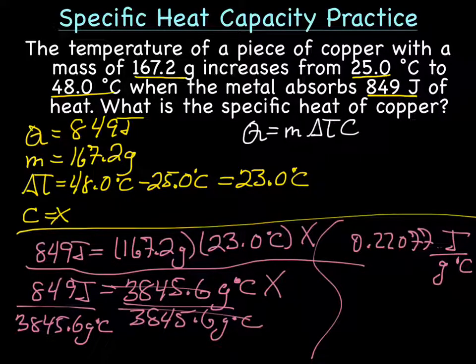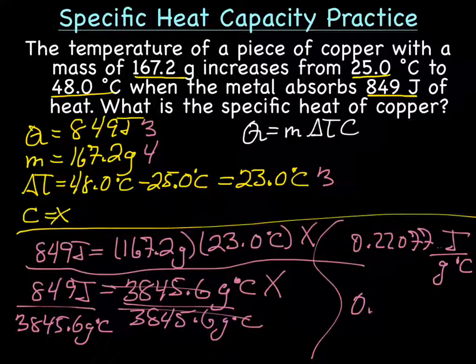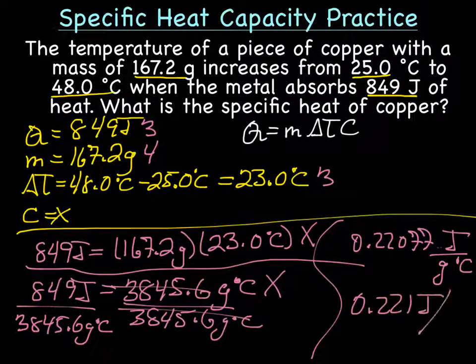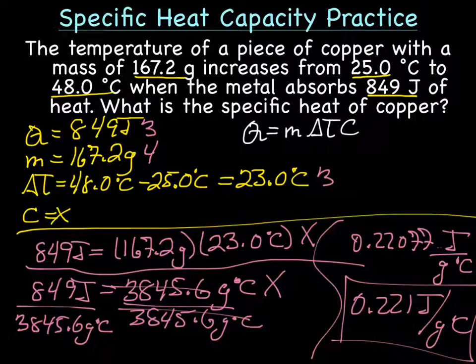Now we need to find our sig figs. So Q, we have 3 sig figs, M has 4 sig figs, and delta T is 3 sig figs. So our final answer is going to be 0.221 joules per grams degrees Celsius.